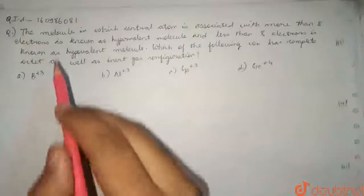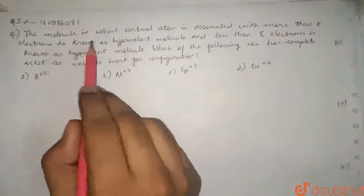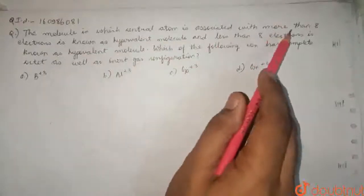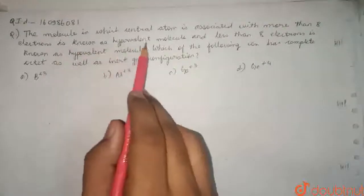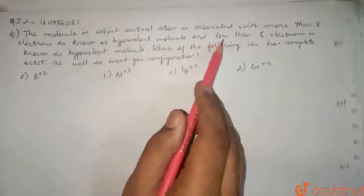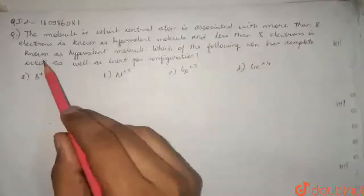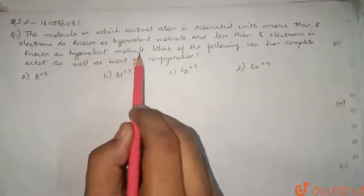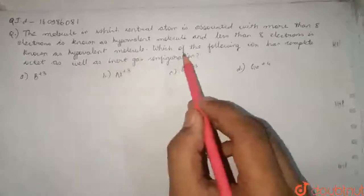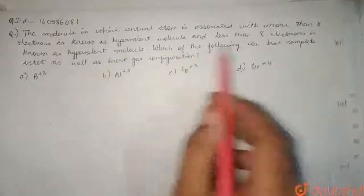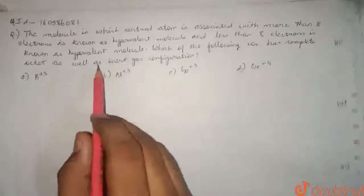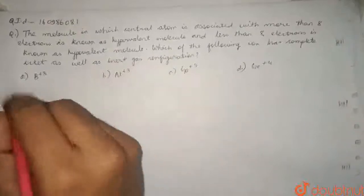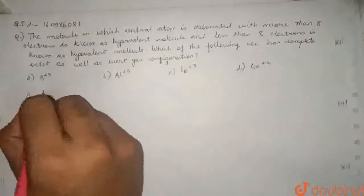Hello friends, here is a question given. The molecule in which the central atom is associated with more than 8 electrons is known as a hypervalent molecule, and less than 8 electrons is known as a hypovalent molecule. Which of the following ions has a complete octet as well as inert gas configuration? There are 4 options given. Let's start this question.